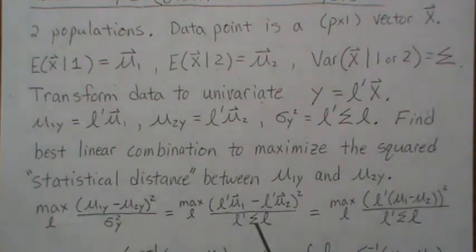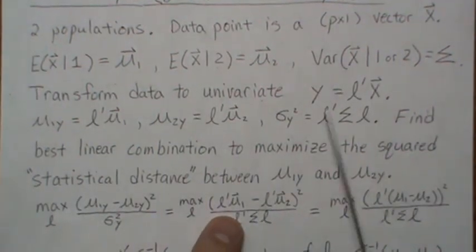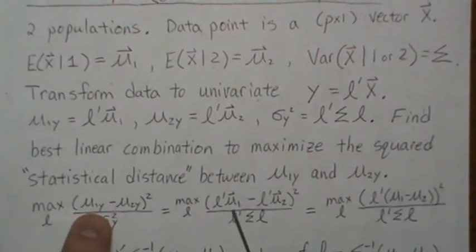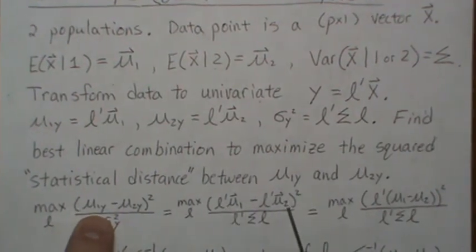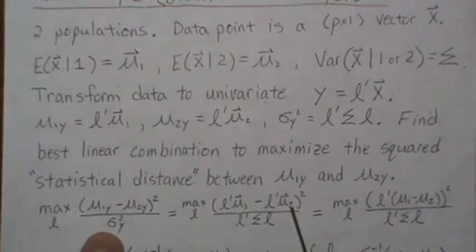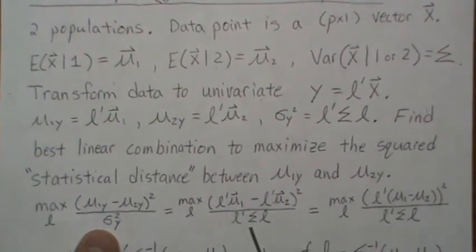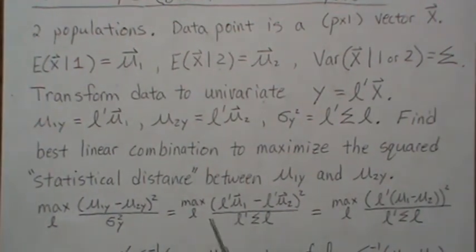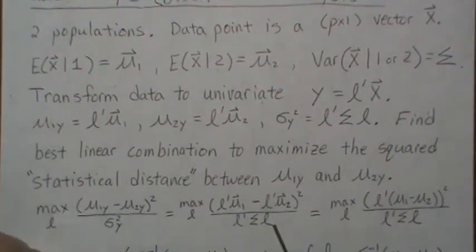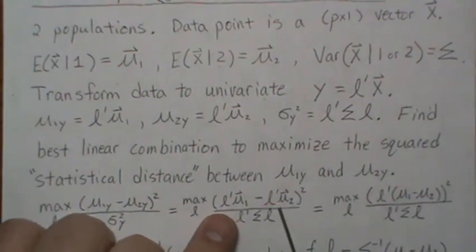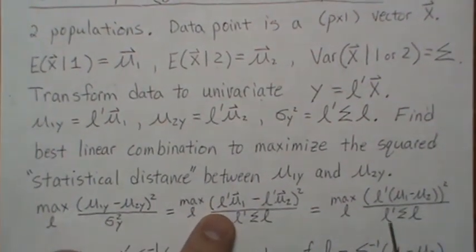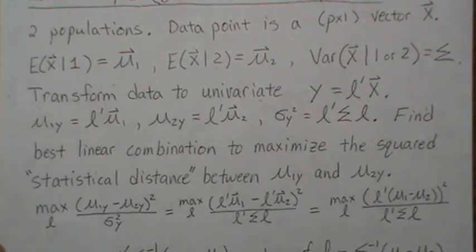Now, if we put back in what the transformations were, so the mean for population one was this, the mean for population two was this, the variance is this, and still we're trying to maximize this over all possible linear combinations. And we can factor out an L prime from both of those, and we get this.